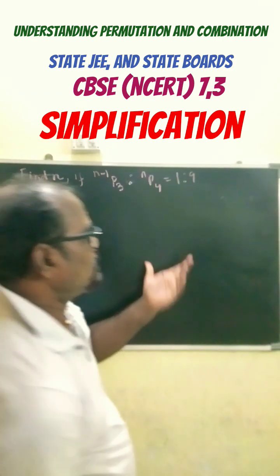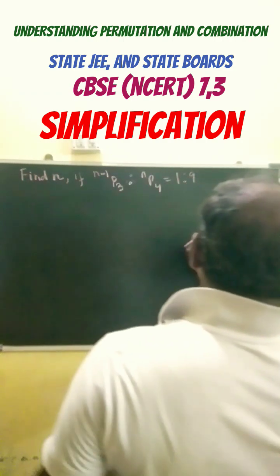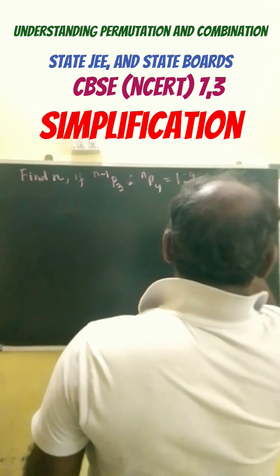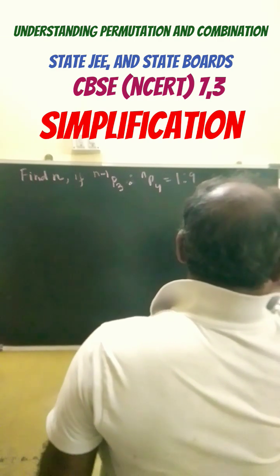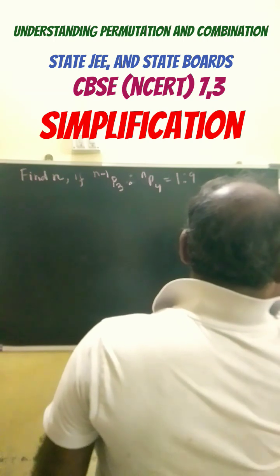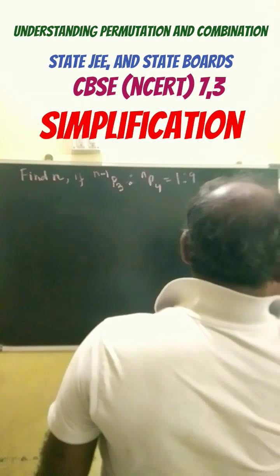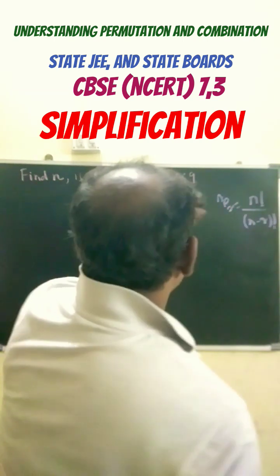It is a very simple question. So we have to use the formula here that is nPr equals to factorial n by n minus r factorial. We have to use this formula over here.